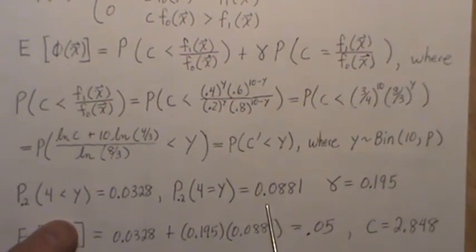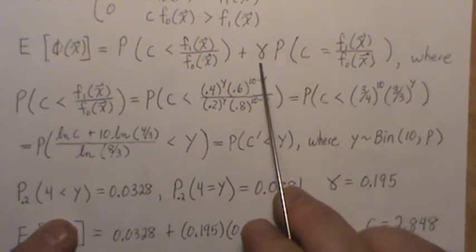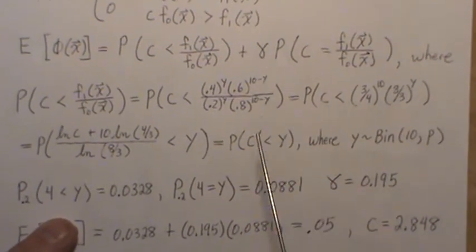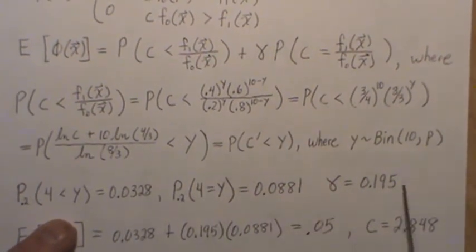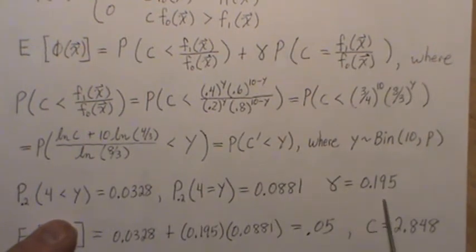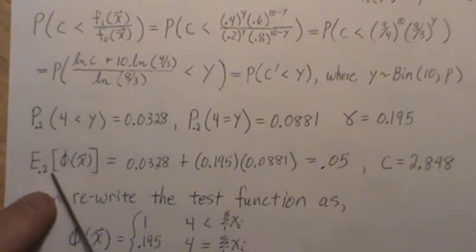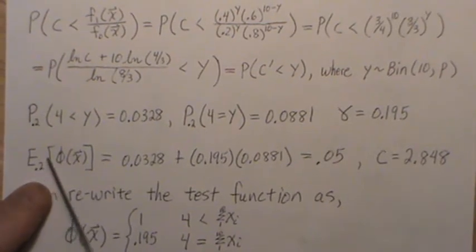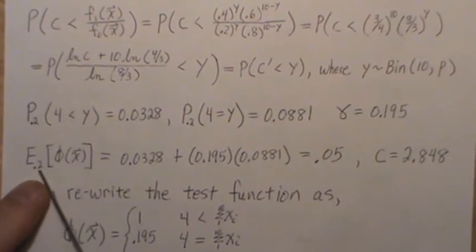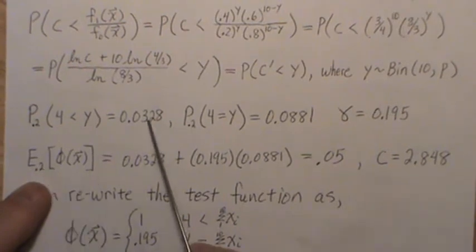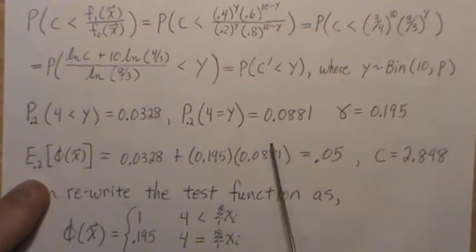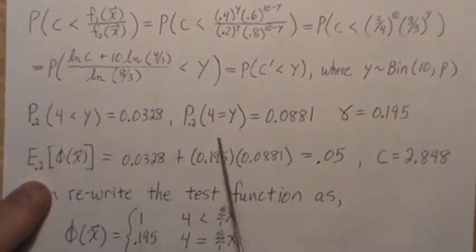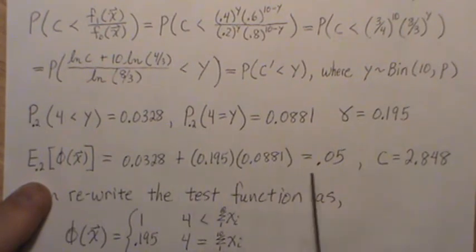But when we add those, it's too much, so we have to pick the gamma such that it makes it 0.05, and that gamma is 0.195. So if we determine the size of the test, it's the expected value of this assuming the null hypothesis is true, then we bring them down and then this product and sum is 0.05.